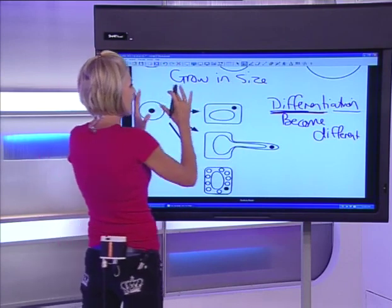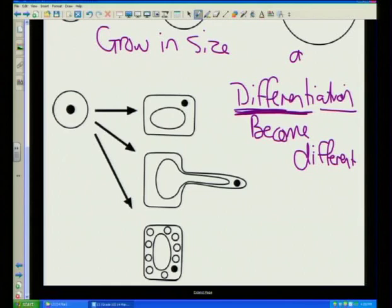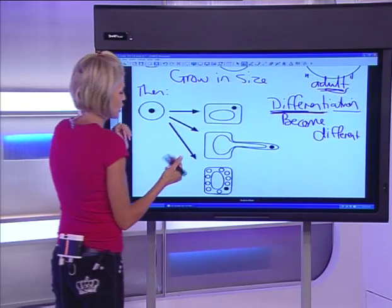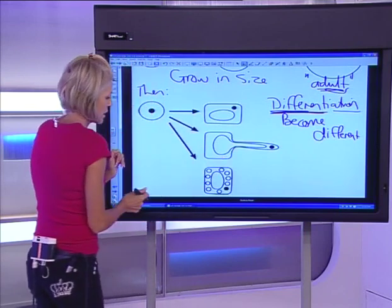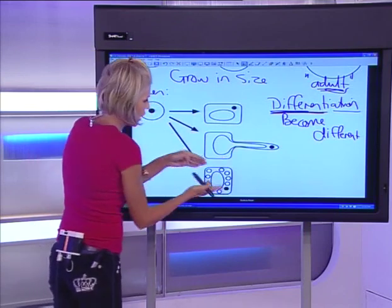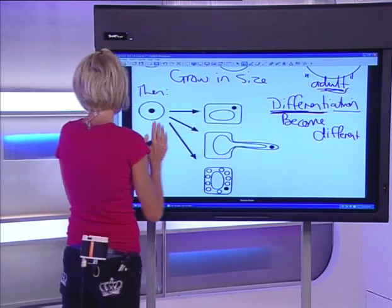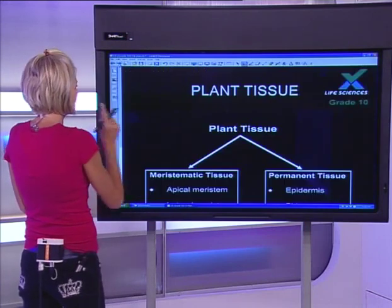So once we have the adult cell and it's fully grown, it will start to differentiate. It can become an epidermal cell, a root hair, or a chloroplast — but it changes. Now we look at plant tissue, and this grouping is something you need to know.